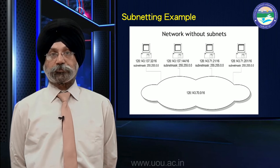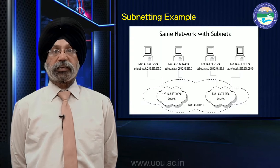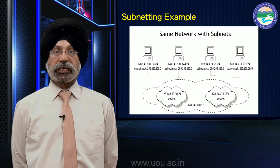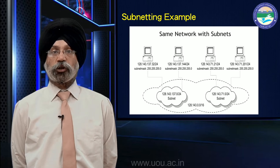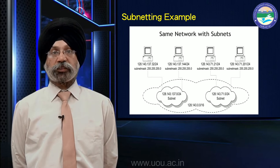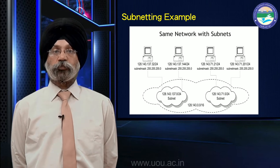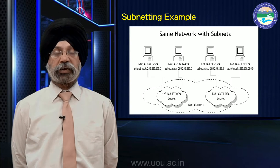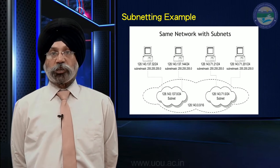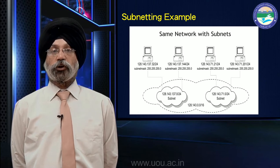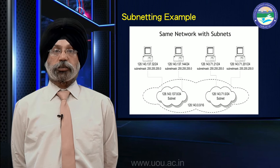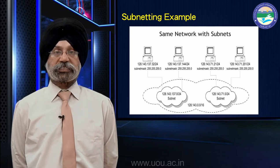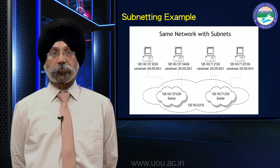All these hosts will be in the class B network. Now, if we view the same network with subnets, the major network is 128.143.0.0/16. We have created two subnets: 128.143.137.0/24, where the third octet is merged into the network ID to make an extended network ID, and a second subnet 128.143.71.0/24.